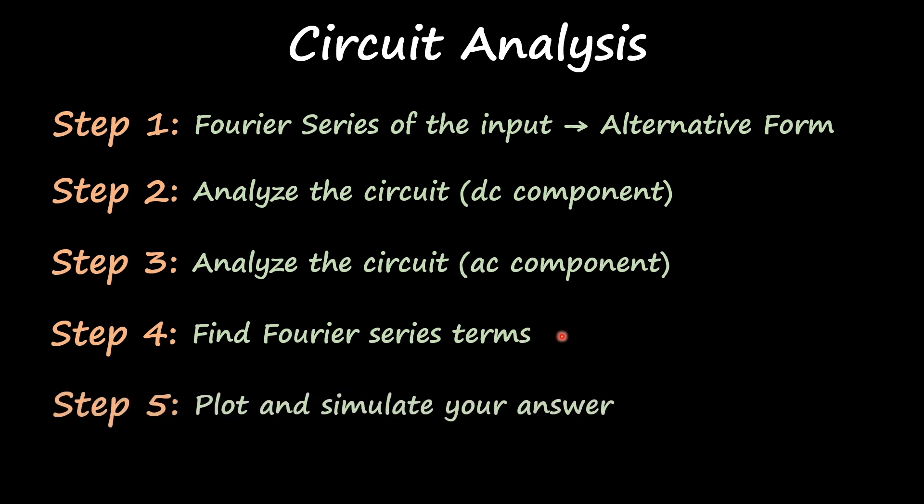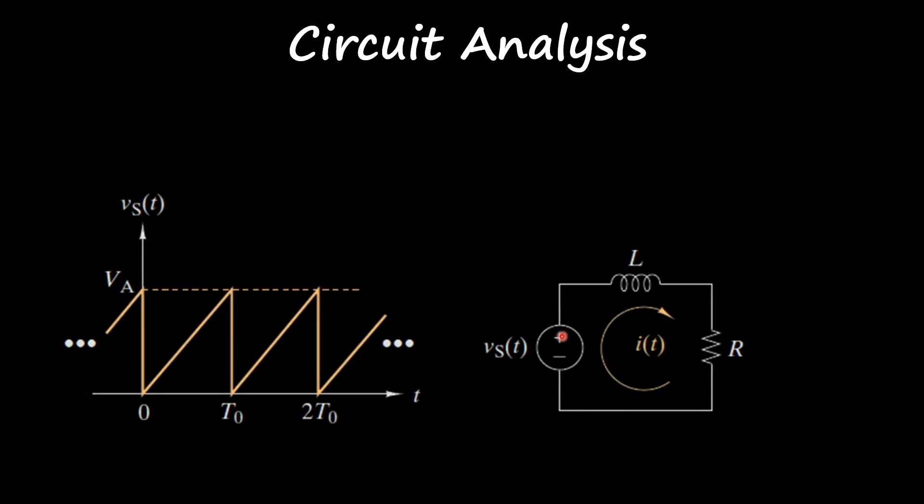So we have our signal here. We're going to apply the sawtooth wave into this LR circuit, so an inductor and a resistor connected in series. The information that we have regarding this signal: it's a peak-to-peak of 20 volts, a 50 ohm resistor.